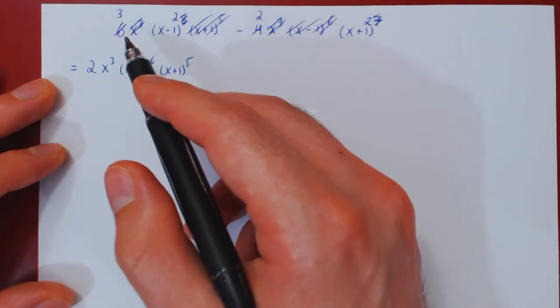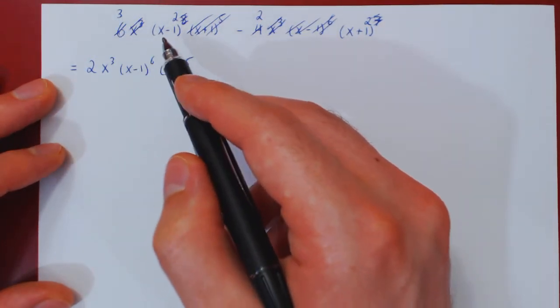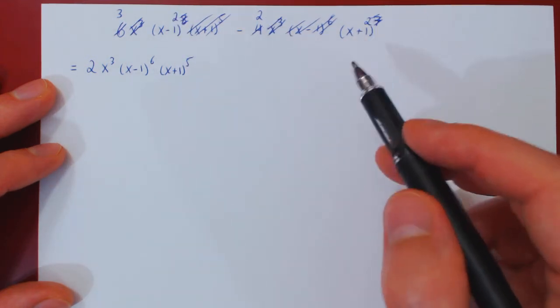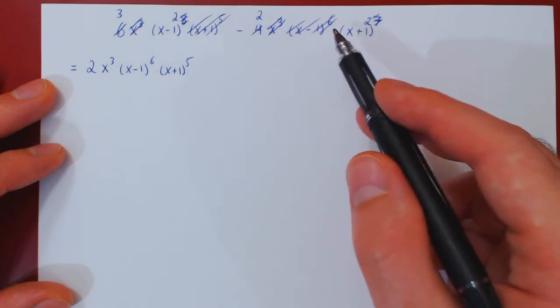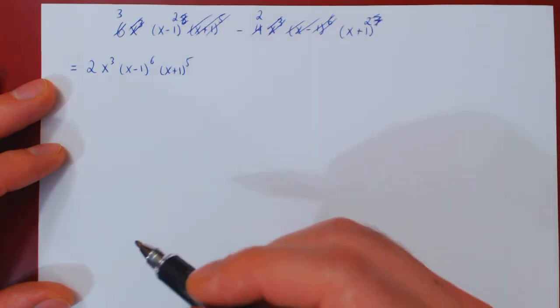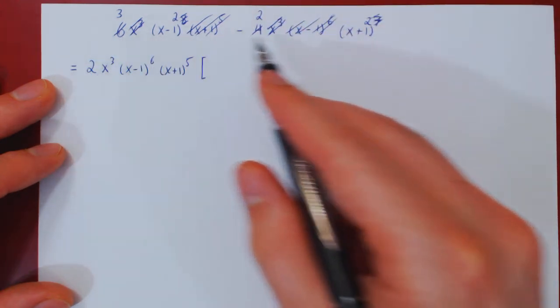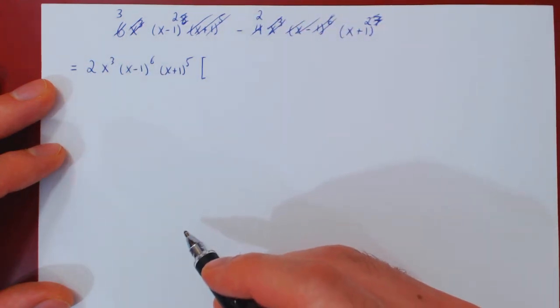And now if you look at what's left in the first term, 3 x minus 1 squared, and in the second 2 x plus 1 squared, the remaining 2 terms no longer have any common factors. So we can open up our bracket and write down the 2 x plus 1 squared.